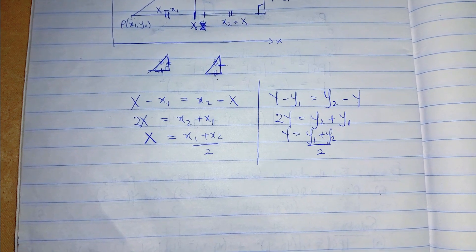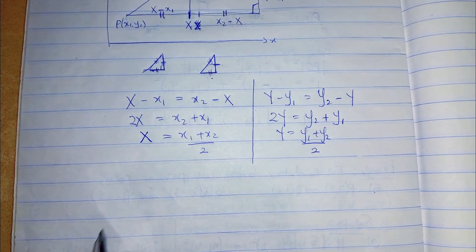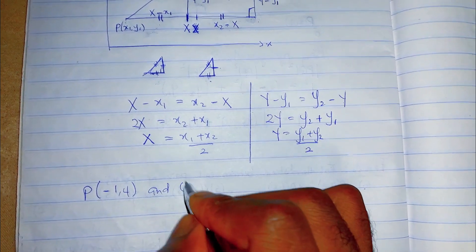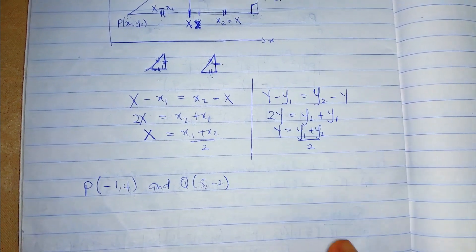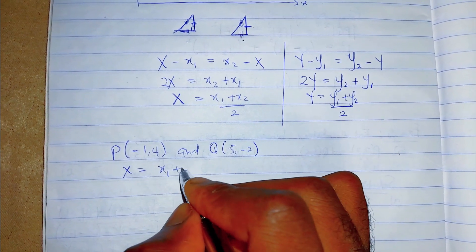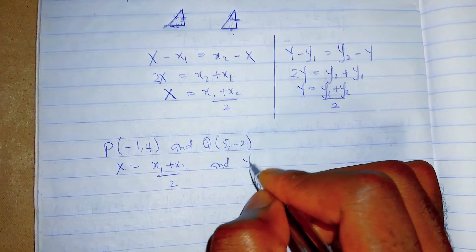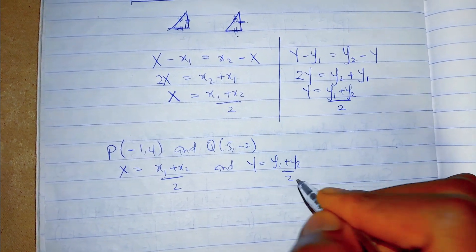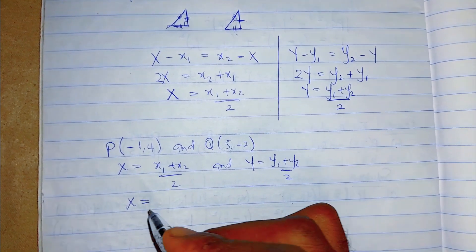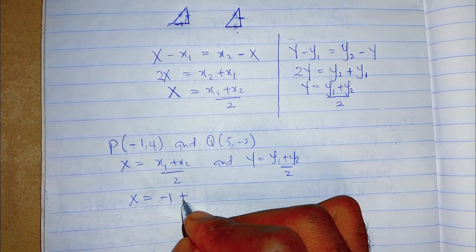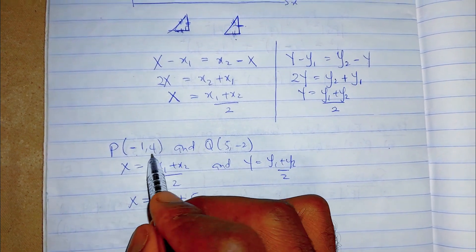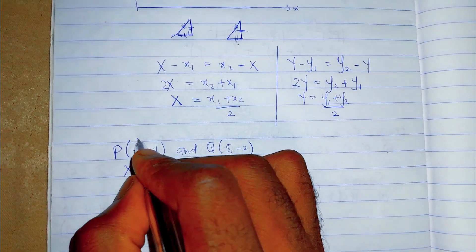Now let's solve a question. We want to find the coordinates of M, the midpoint of two points. P is (-1, 4) and Q is (5, -2). We apply the formula: x = (x1 + x2) / 2 and y = (y1 + y2) / 2. Remember x1, y1, x2, y2 — you can label them to keep track.